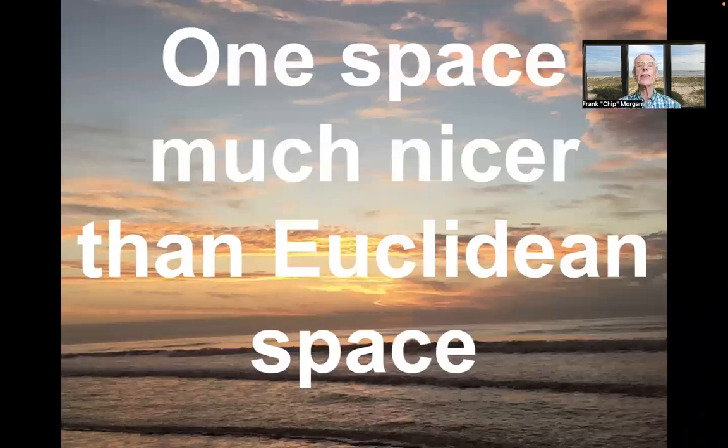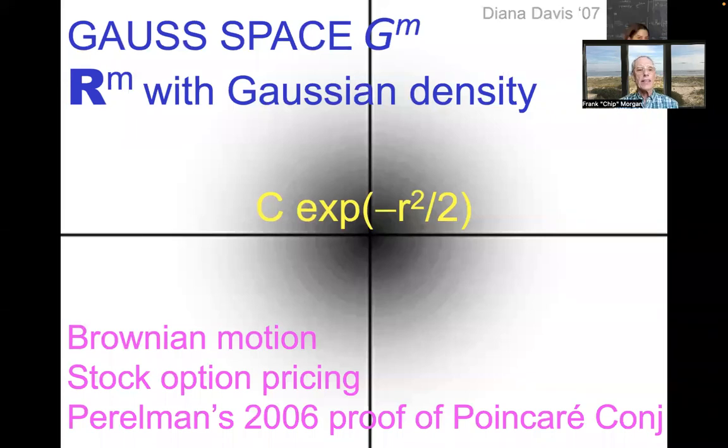You know, there is one space that's much nicer than Euclidean space. I'm not thinking of the sphere. No. It's Gauss space. That is, R^m, but with Gaussian density, which goes like e^(-R²/2), with respect to the distance R from the origin. So it drops off. The density drops off exponentially. It's concentrated around the origin and then drops off very rapidly. Lots of applications in probability theory for this. Brownian motion, stock option pricing. It and the isoparametric consequences were used in, specifically in Perelman's 2006 proof of the Poincaré conjecture.